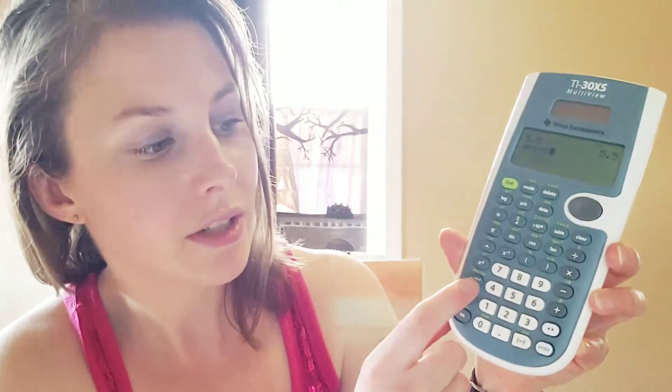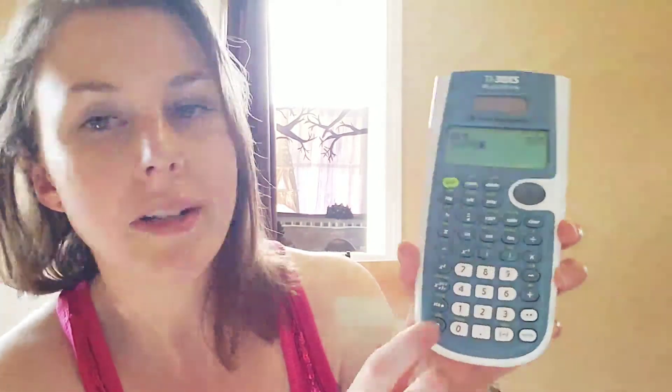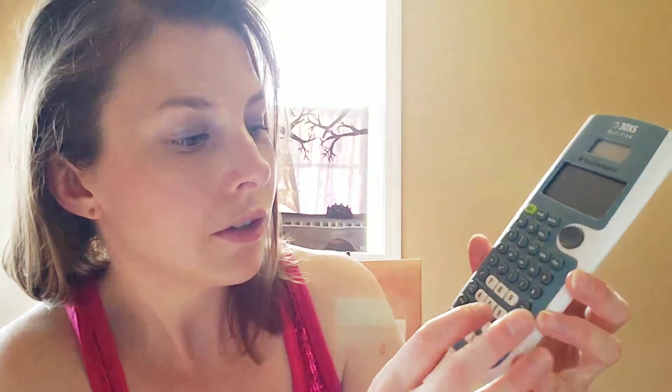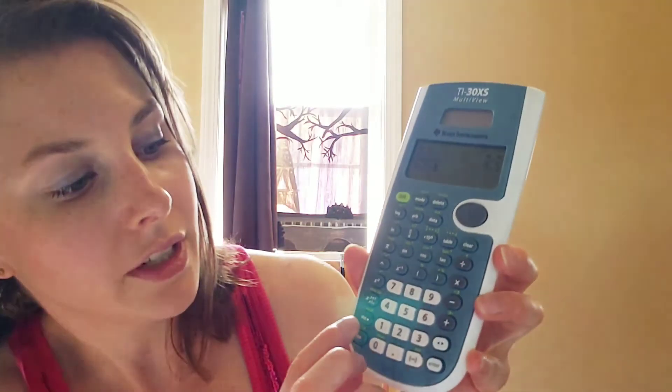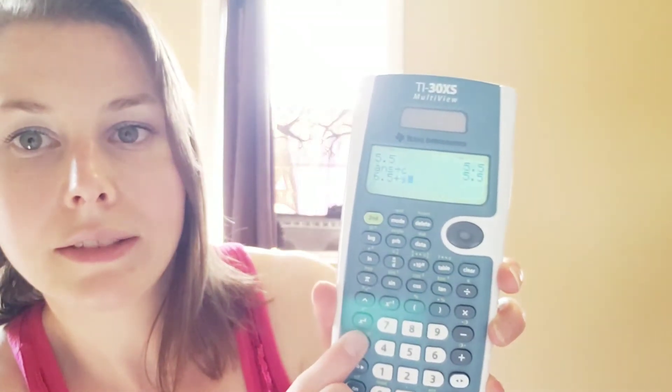To save it on the TI-30XS, press Store and select a variable — x, y, z, a, b, c — there are seven spots where you can save a number. Let's say we want to save this number in C. Press Enter, and now C is defined as 5.5. To use it later, you type 6.5 plus, then recall C, press Enter, and it adds 5.5 to 6.5 to give us 12.